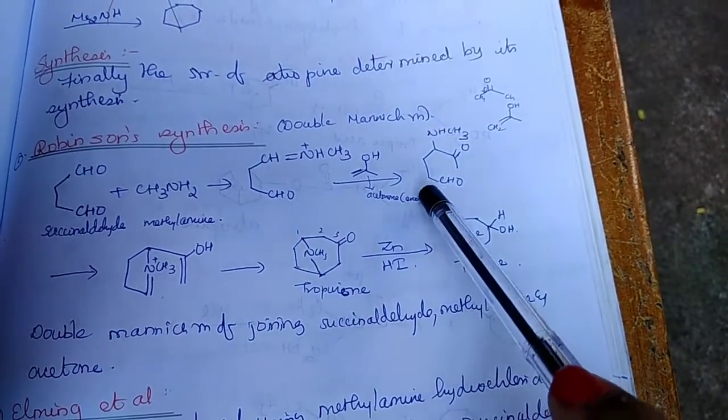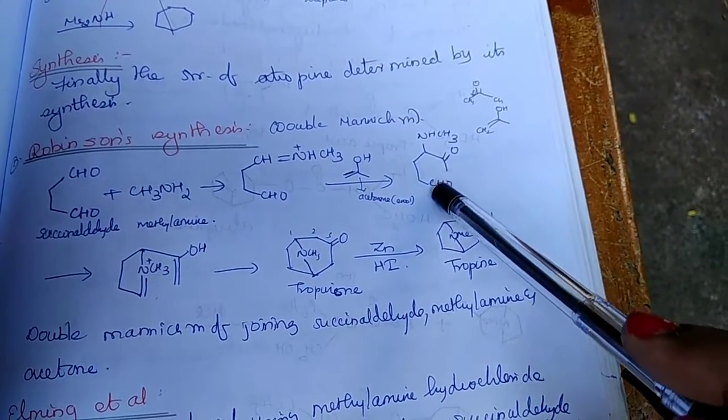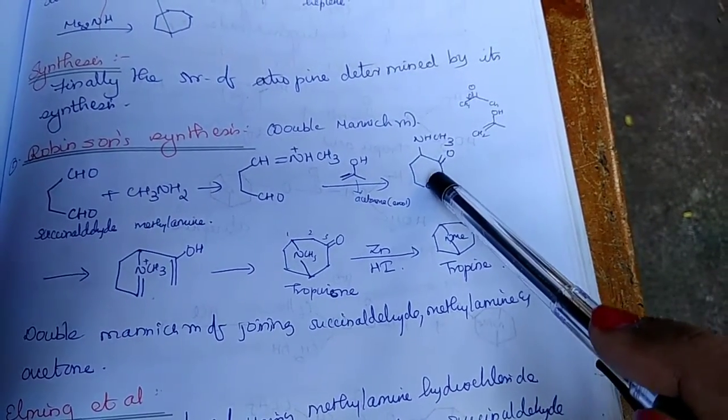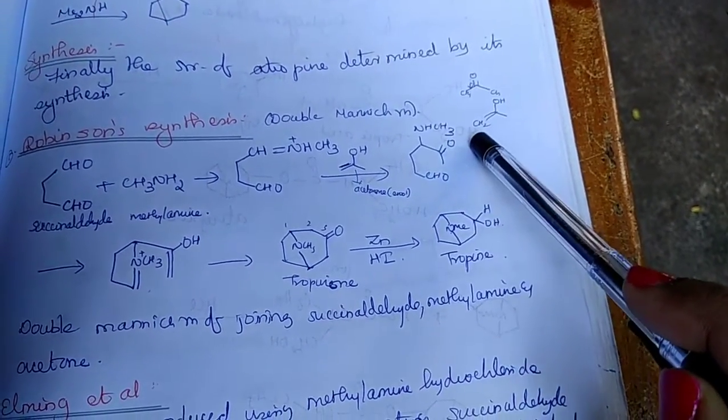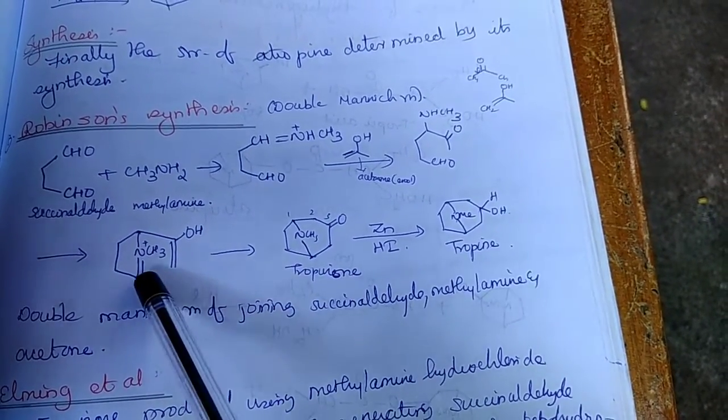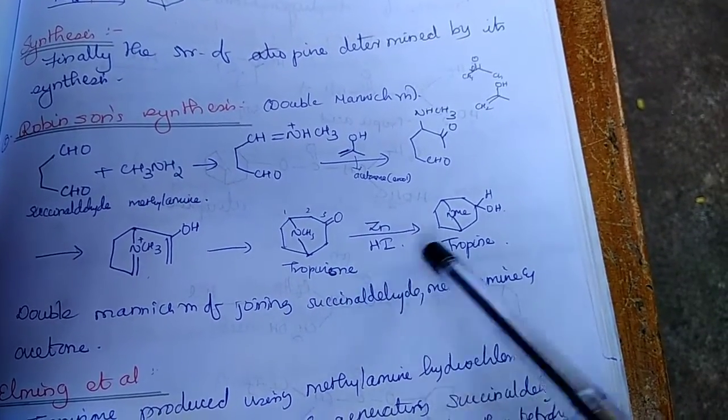Now, the NCH3 group makes a bond with this carbon, forms a double bond and the double bond O here forms a double bond and OH here. And in the next step, we get tropinone by ring closure. And this tropinone on reduction with zinc and HI, we get tropine.